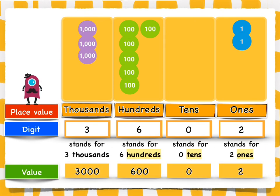So, we have the digit 2 at the ones place. It has a value of 2. The digit 0 is at the tens place. It does not have any value. The digit 6 is at the hundreds place and it has a value of 600. The digit 3 is at the thousands place and its value is 3,000. The number that is shown is 3,602.